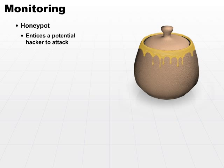Then retaliation starts to take place. It's not uncommon for very good hackers, once they've been tricked into a honeypot, to either themselves or with some friends take revenge on the system and really try to figure out what you're trying to hide from them.